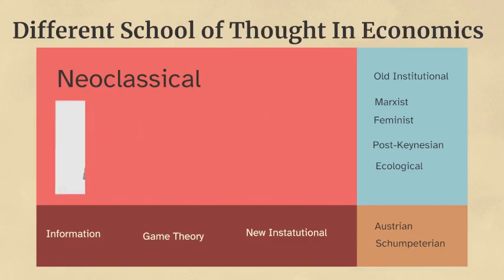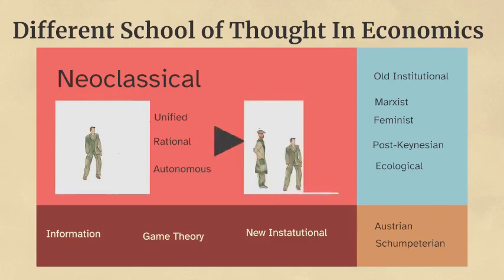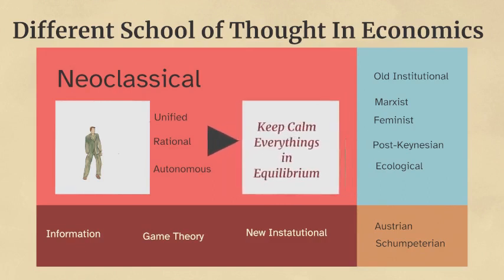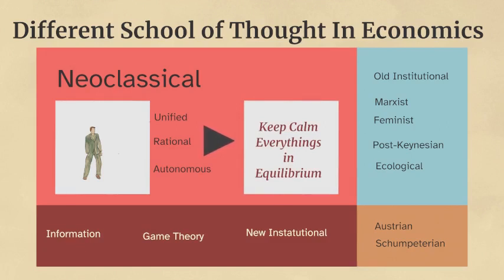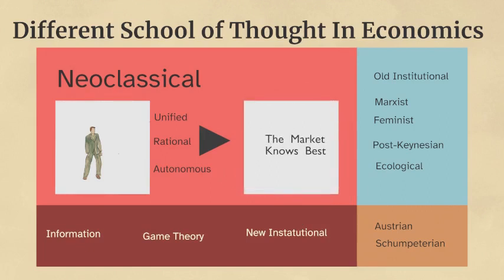This approach begins with the unified, rational and autonomous individual, and then uses the theoretical model of the individual to derive models of society. This is paired with an understanding of markets as relatively stable and harmonious institutions, and even dynamics such as growth are treated as relatively smooth and unchaotic activities. This is often, though not always, tied with advocacy for pro-market policies, such as privatization and deregulation.